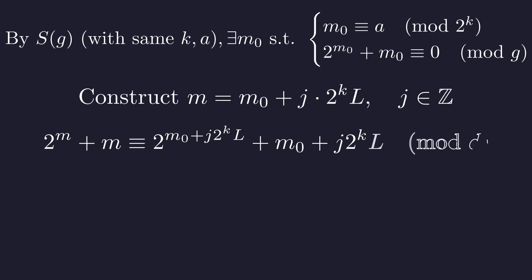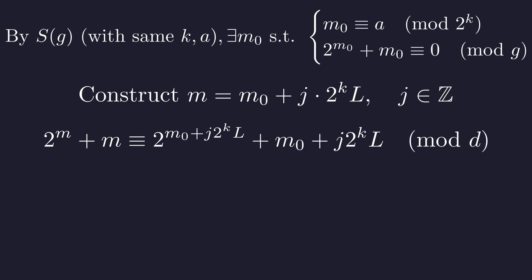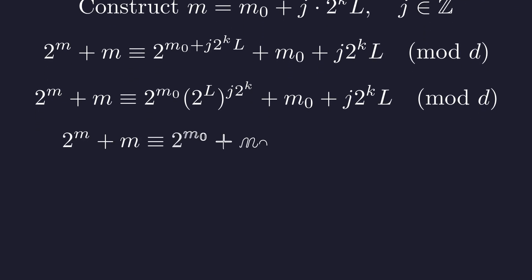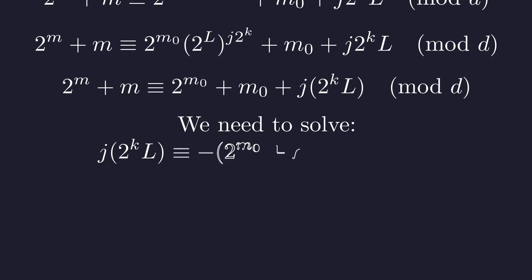Let's substitute this into the second congruence. We split the exponent. By Euler's theorem, 2 to the L is congruent to 1. This simplifies the expression significantly. This leaves us with a linear congruence to solve for j.